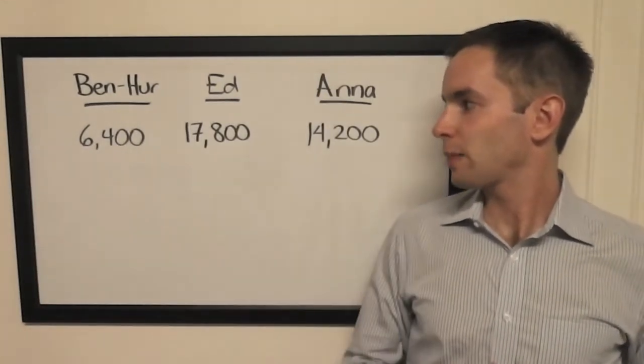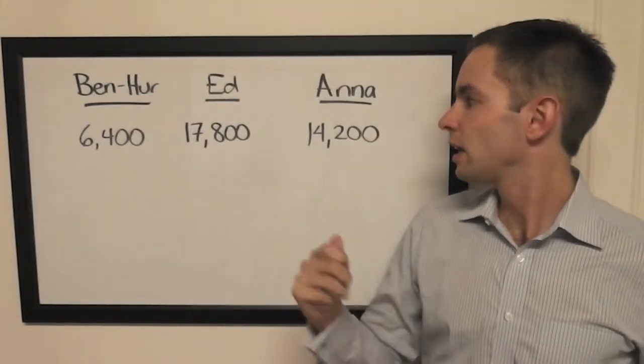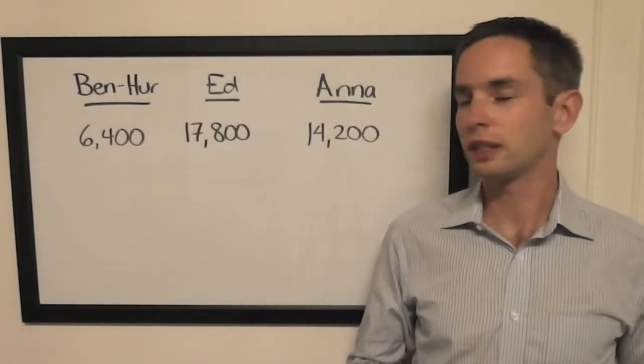Our favorite name ever has 6,400. He's in third place heading into Final. Ed, the attorney, is at 17,800 and Anna is in second with 14,200.